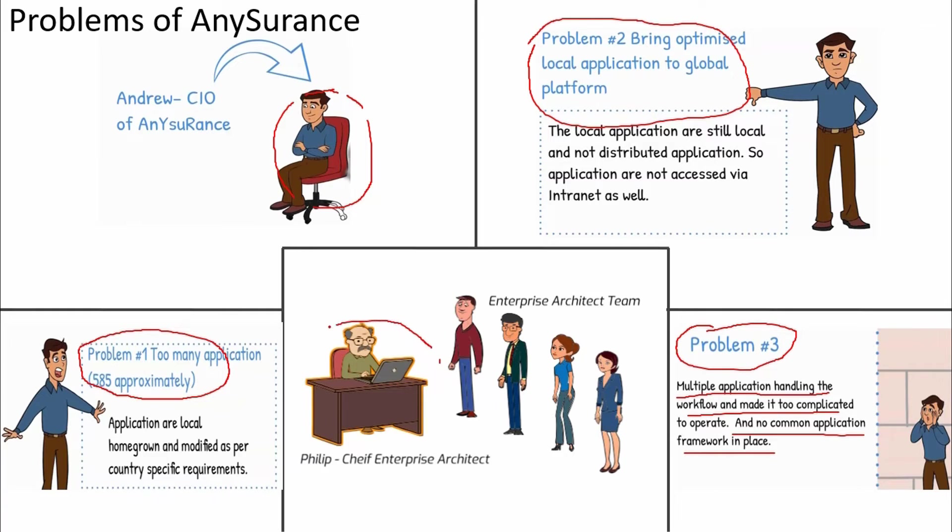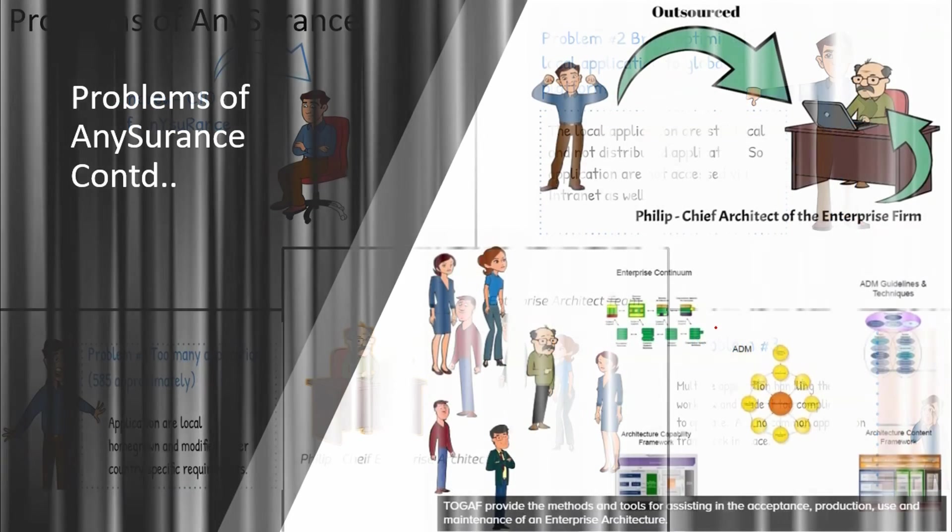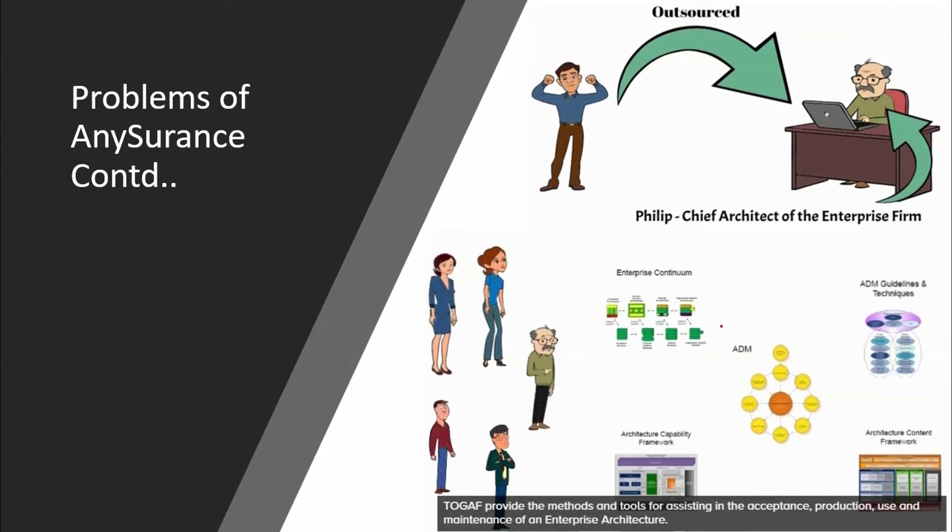Philip, the Chief Enterprise Architect, along with the team of enterprise architects starts their preliminary work in this phase. Let's move to the next section. In level one of this course, Philip's team has learned the concepts of Architecture Development Method, which is ADM, followed by enterprise continuum, architecture content framework, architecture capability and ADM guidelines. Here the team will apply all the concepts learnt and design the preliminary phase.